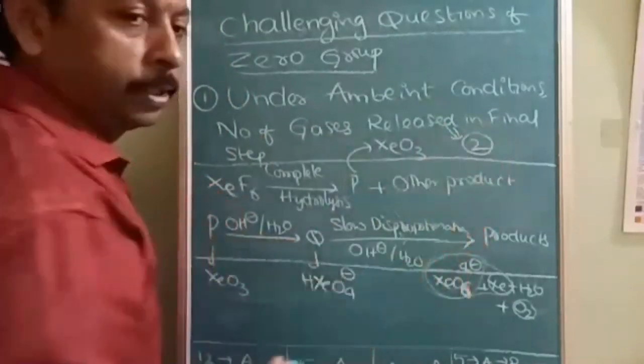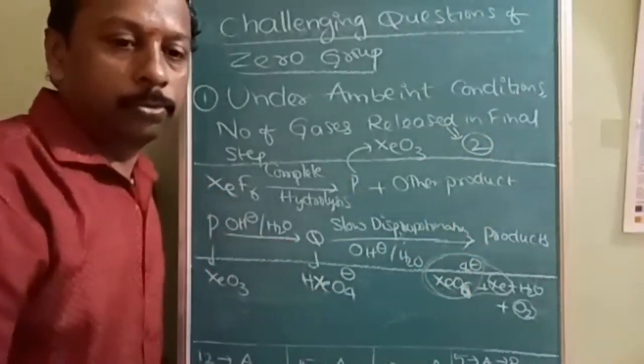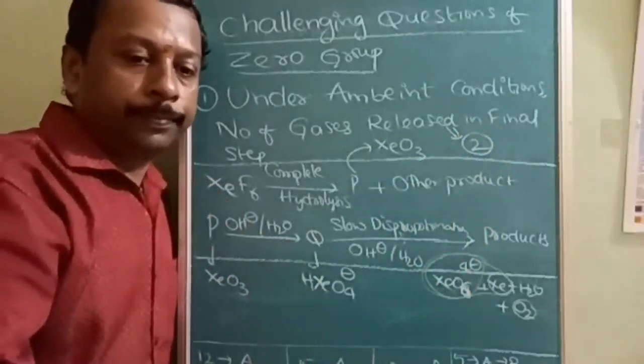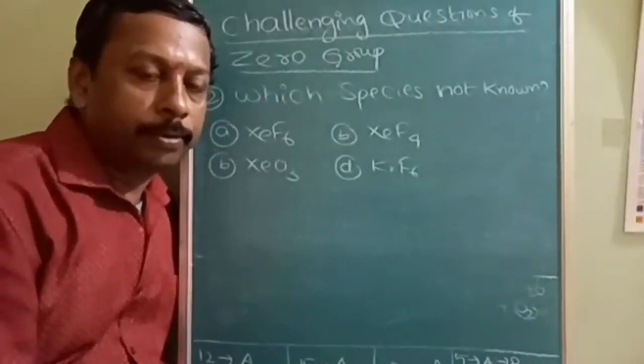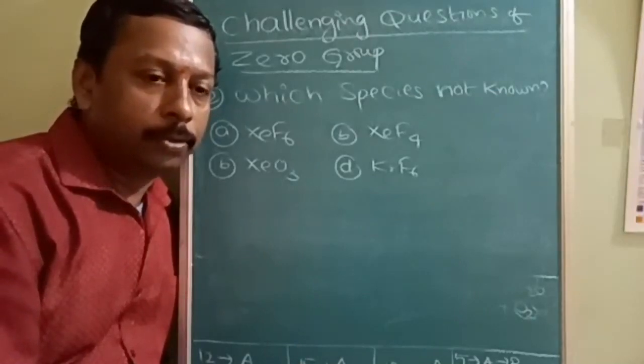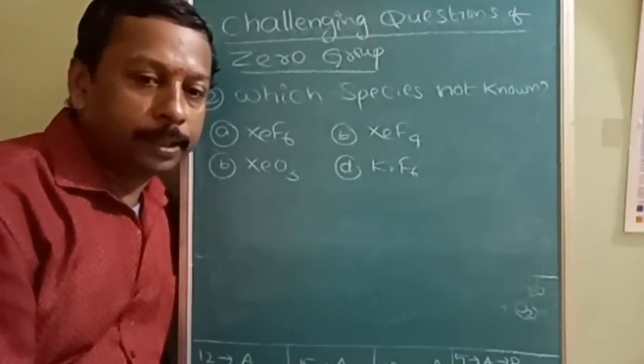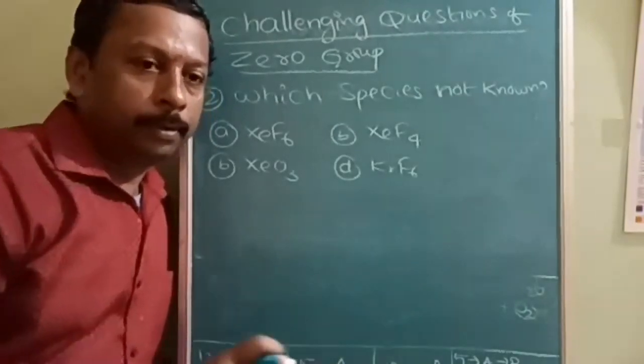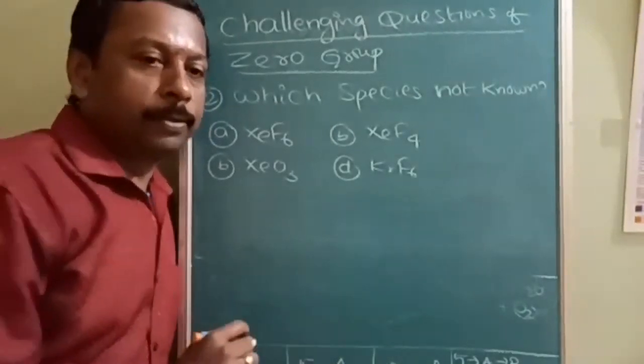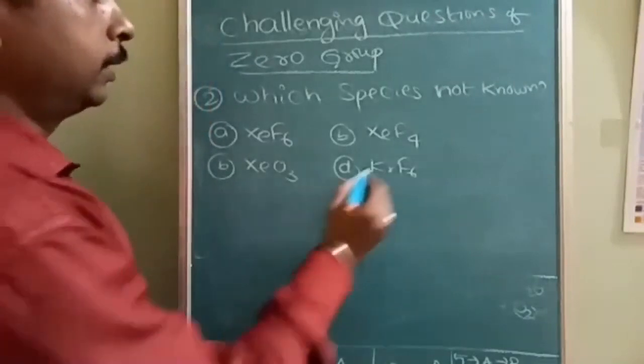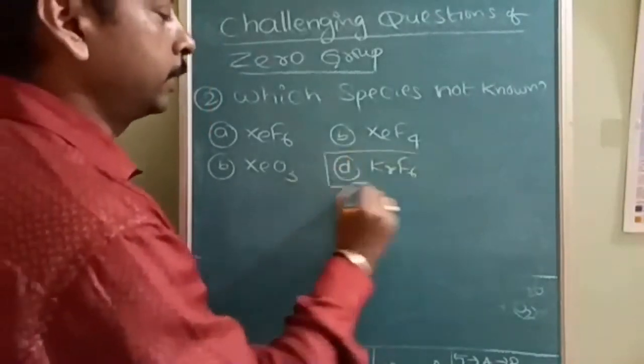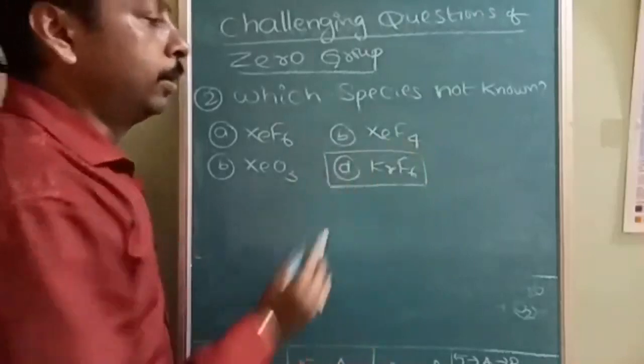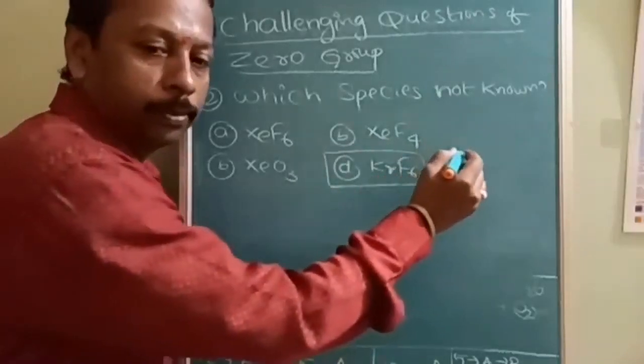Note down this. Here is the next question: which species is not known? Four options are given, you can select the proper correct option. This is one of the simplest question. Which species is not known? Answer is KrF6. What is the reason? Because down the group, ionization energy decreases.